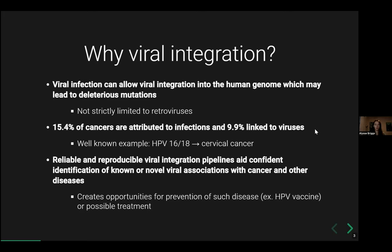Reliable and reproducible viral integration pipelines can aid in confident identification of either known or novel viral associations with cancer and other diseases, creating opportunities to find methods of prevention or treatment. With the example of HPV, this vaccine is recommended not just to protect you from the infection itself, but from the cancer that can follow.